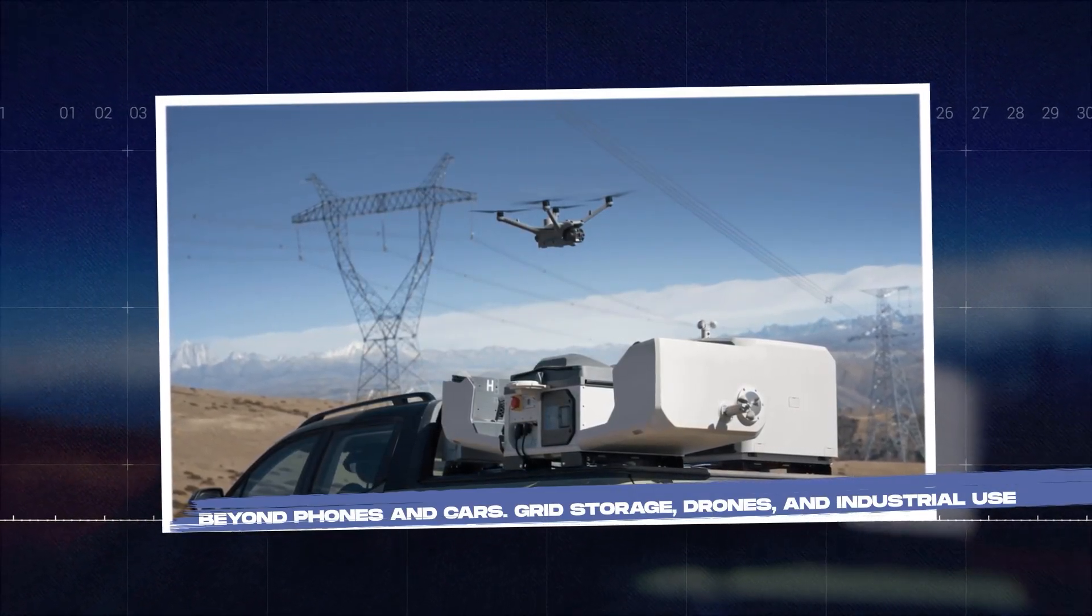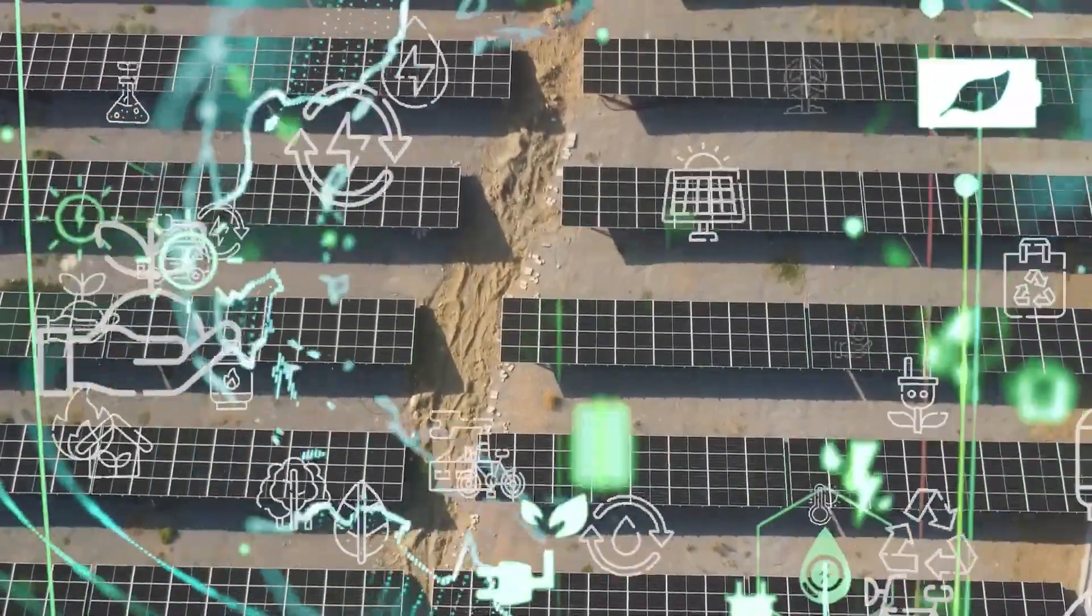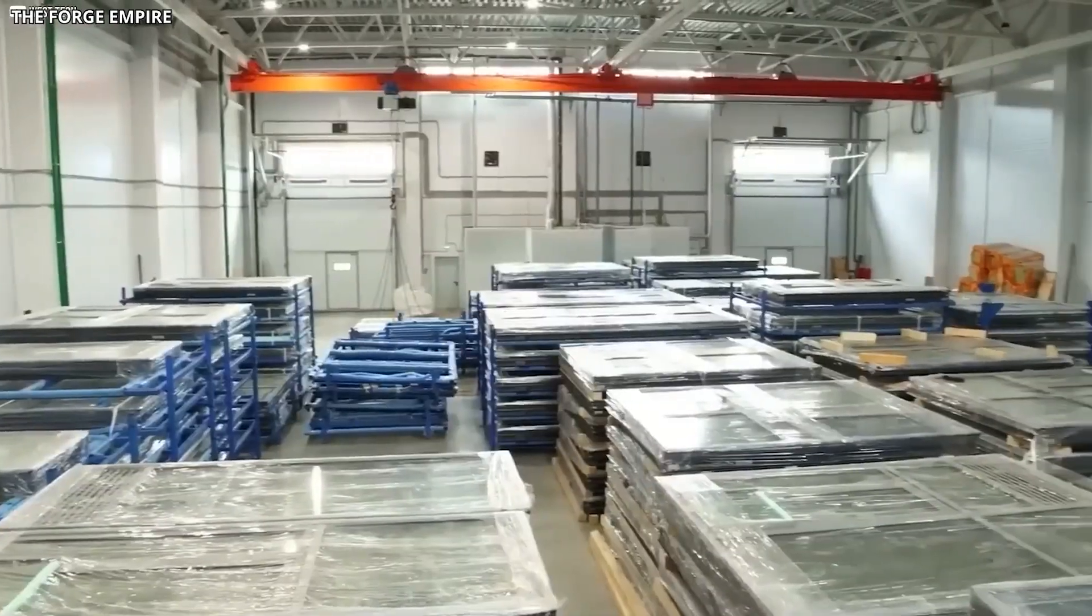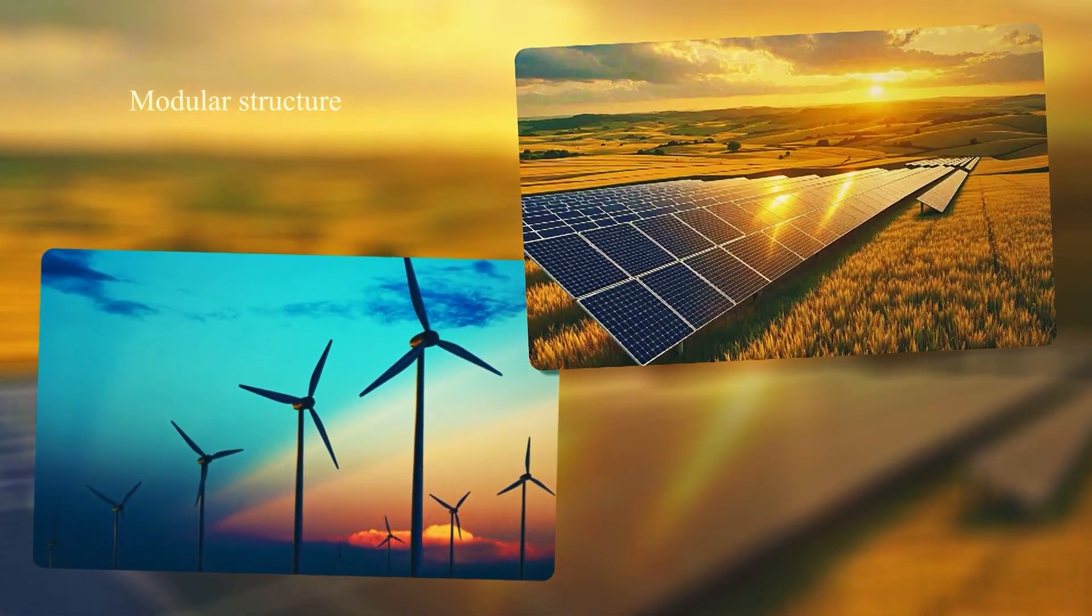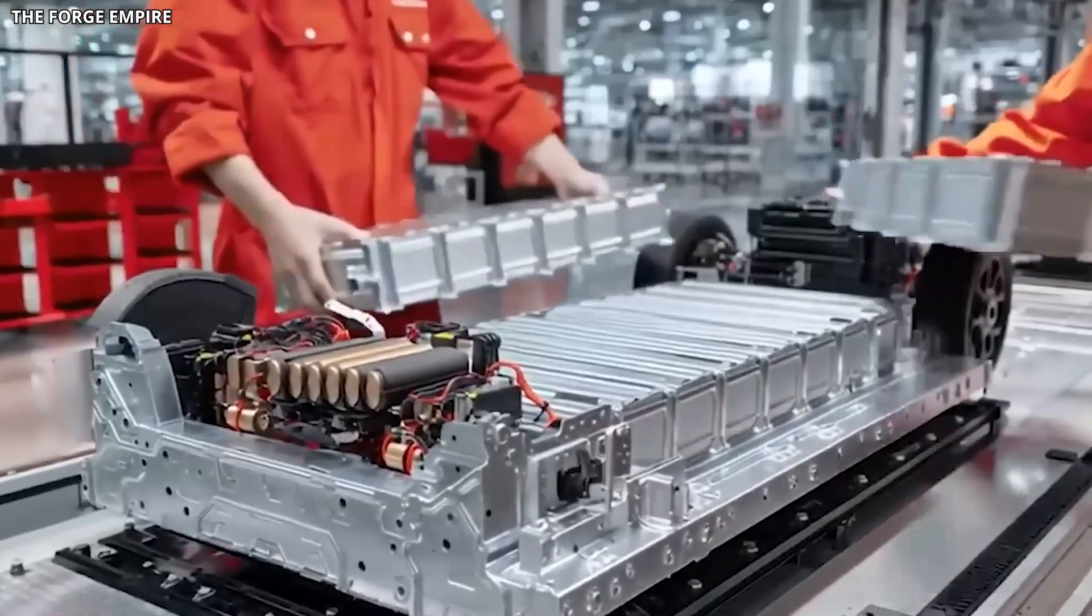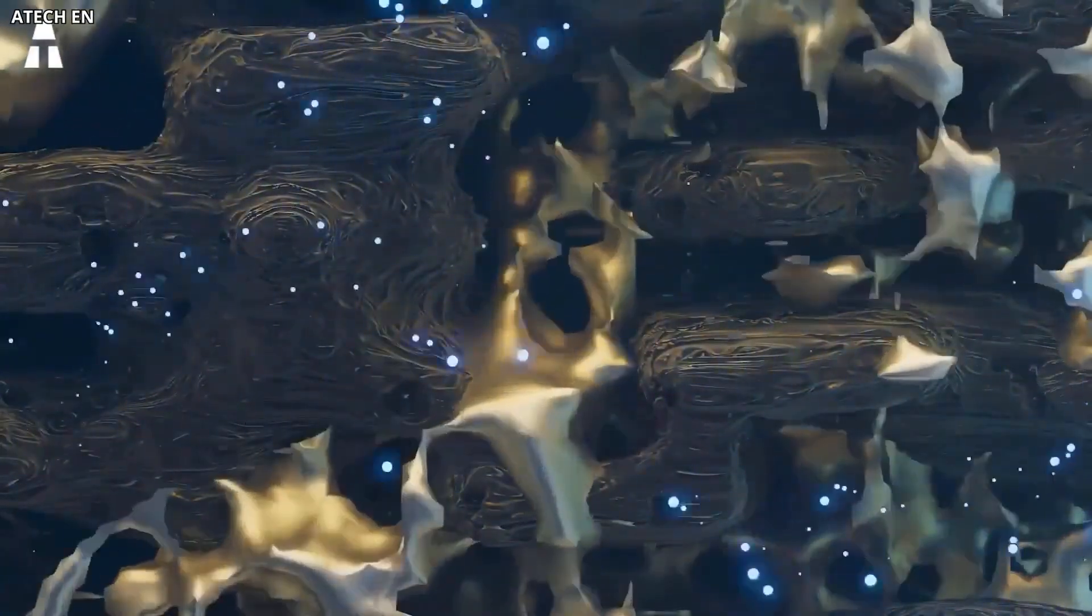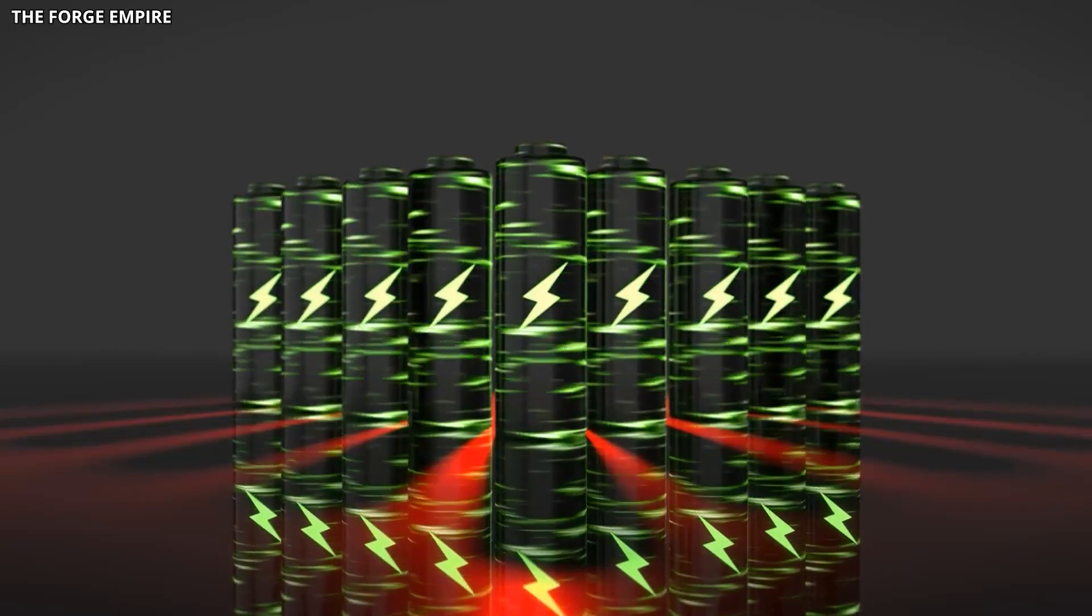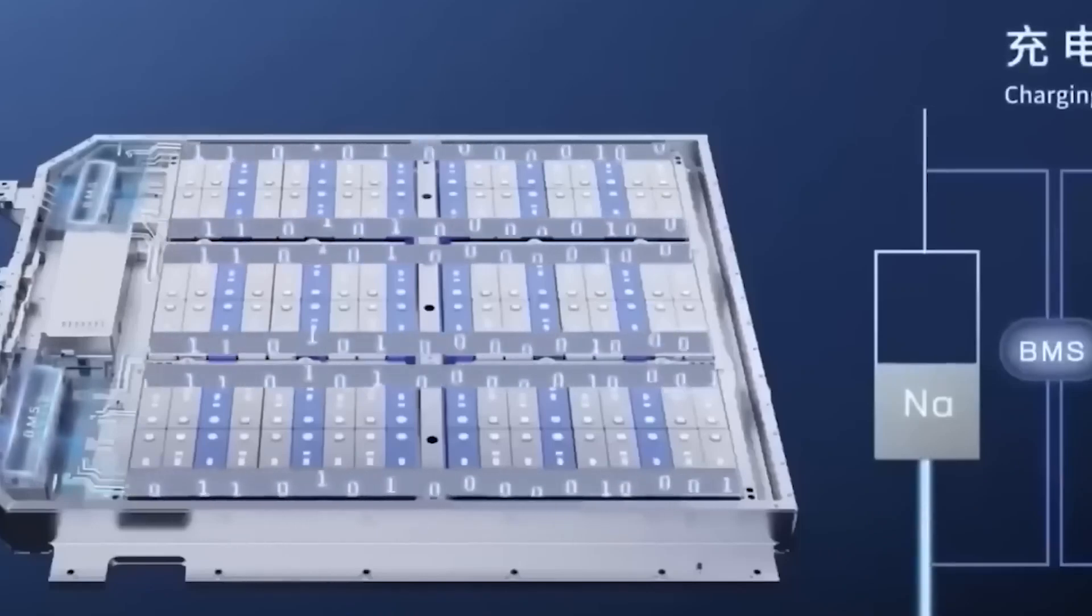Beyond phones and cars: grid storage, drones, and industrial use. Energy grids need storage to balance supply and demand, especially with renewable sources like solar and wind that produce power inconsistently. Graphene batteries, particularly hybrid supercapacitor designs, can absorb and release energy very quickly, making them ideal for load balancing. Their long-cycle life means they can handle daily charging and discharging for decades without significant maintenance.